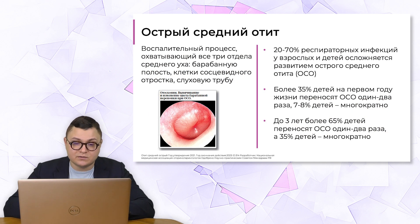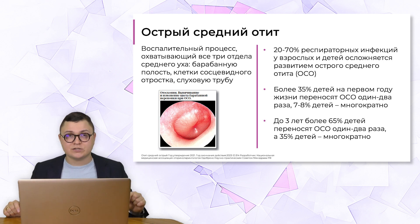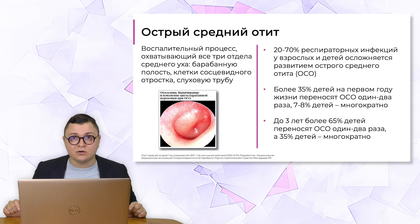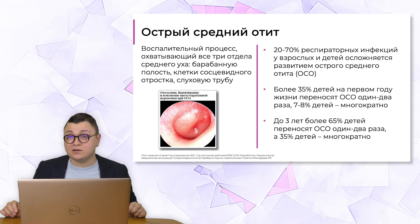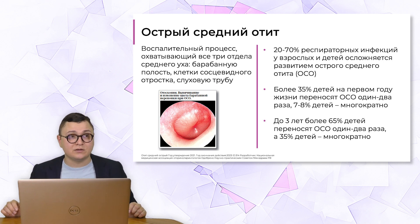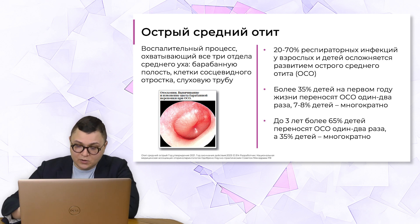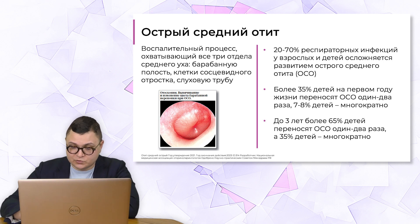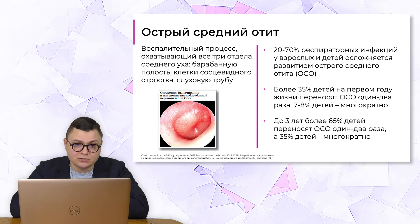Чем характеризуется острый средний отит с позиции эпидемиологии? Во-первых, это последствие острореспираторного заболевания. Второй важнейший фактор развития острого среднего отита – это травма. Гораздо более редкая, чем последствия ОРЗ, но тем не менее травматический генез, проникновение экзогенной инфекции в барабанную полость, развитие воспалительного процесса. Это заболевание чаще встречается в детском возрасте по тем причинам, которые мы обсудили, и чаще всего является последствием ОРЗ.